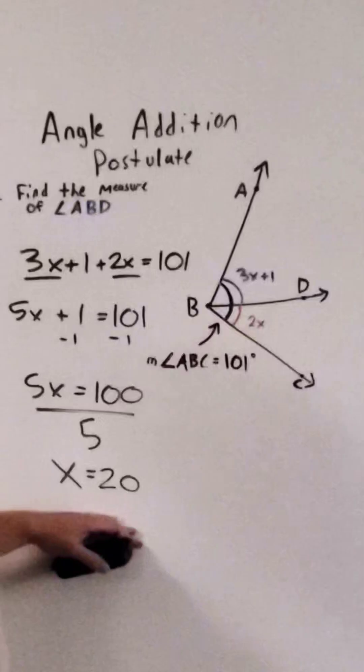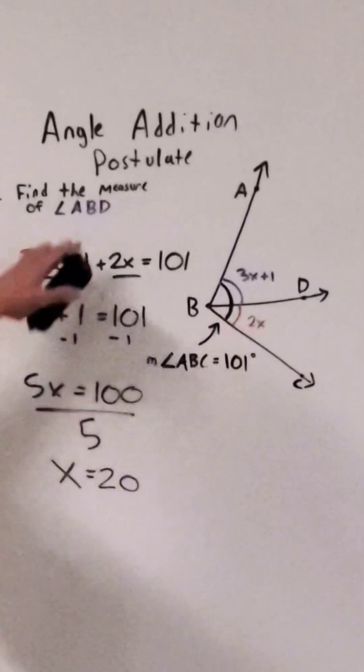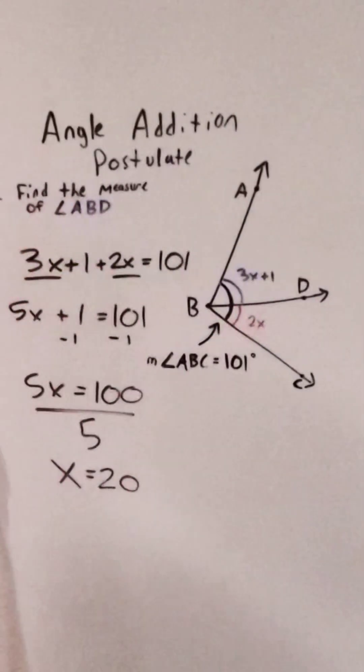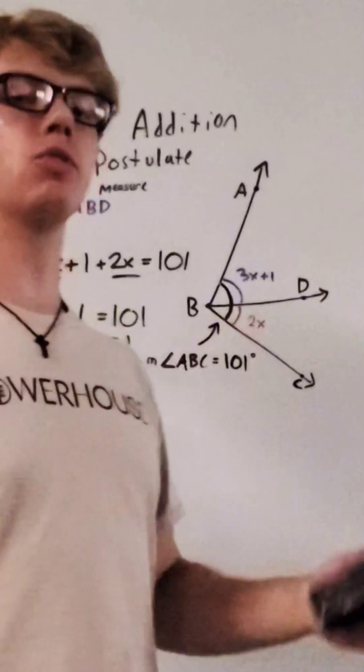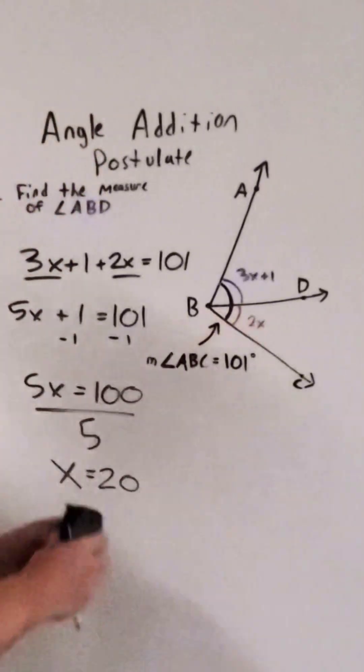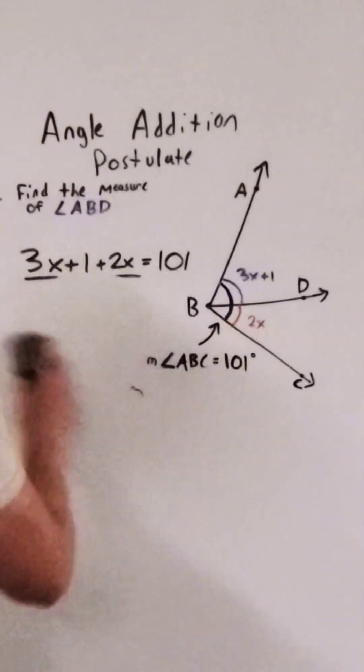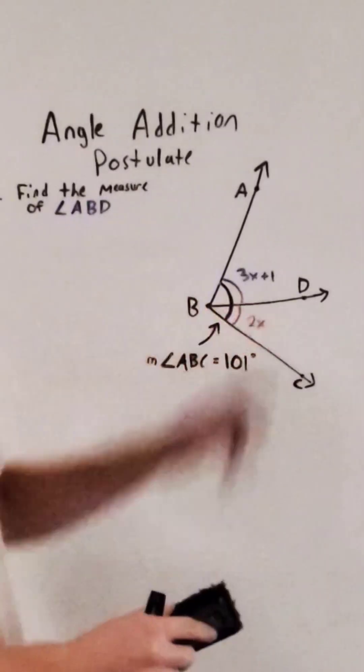Now notice we weren't being asked to find x. We were being asked to find the measure of angle ABD. To do that, we need to plug this 20 in for x.